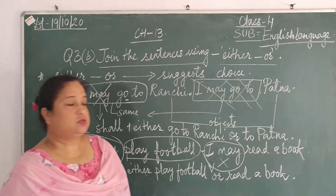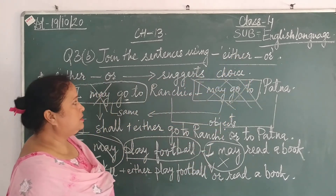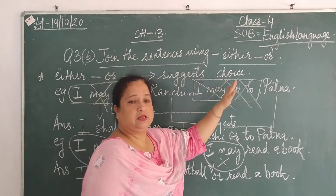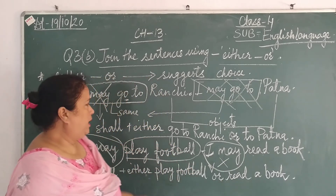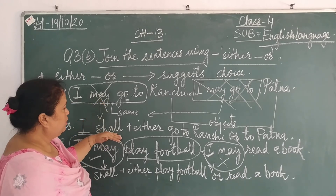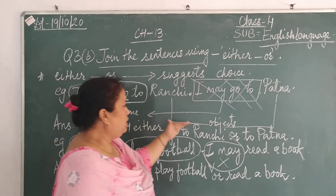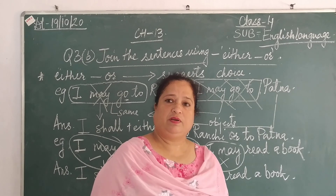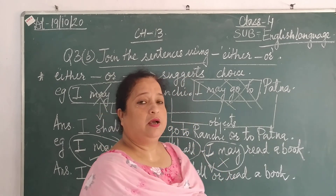So I hope children you have understood how to use 'either...or' by joining sentences. Please remember that this suggests a choice — it gives us a chance to choose between two things. The change that will be done is: instead of 'may,' we will be using 'shall' — 'shall' plus 'either' — and we will be using 'or' along with it. Thank you.